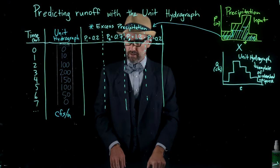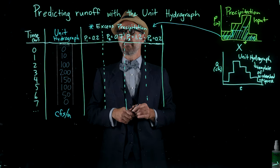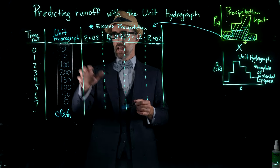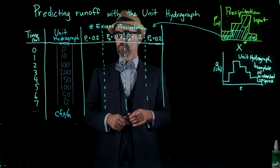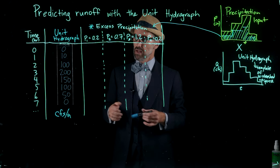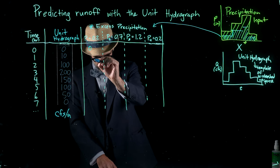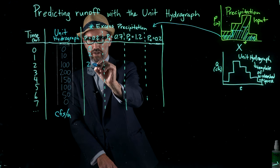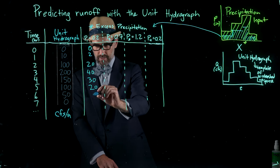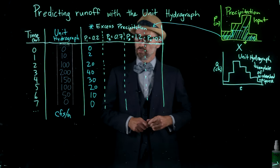We're going to first solve this first column. For p equals one, which is right here, we have precipitation input of 0.2 inches. We have our hydrograph response in cubic feet per second per inch. All we have to do is multiply our precipitation input by our unit hydrograph to derive this column. And so we have 0, 2, 20, 40, 30, 20, 10, and 0.